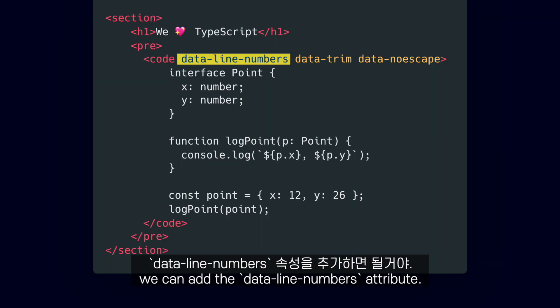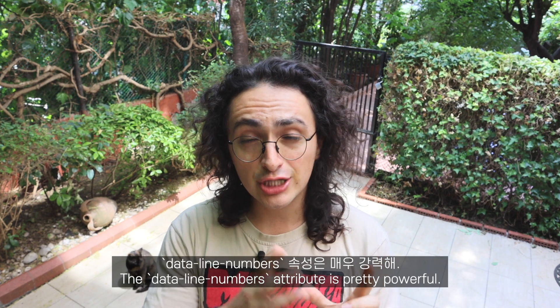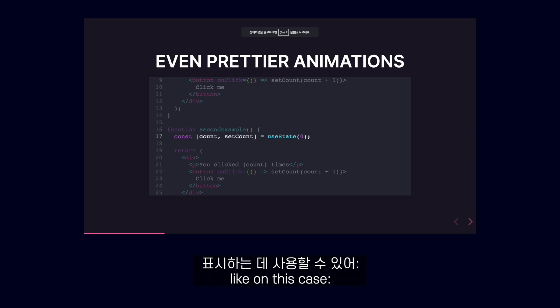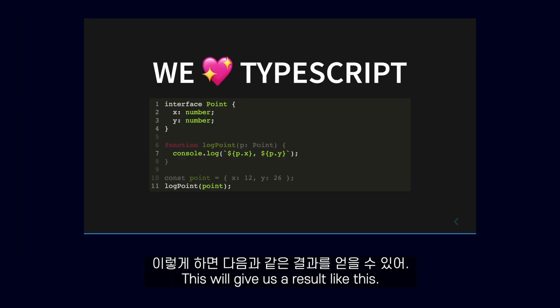To give numbers to the lines of code, we can add the Data Line Numbers attribute, which will result in our code looking like this. The Data Line Numbers attribute is pretty powerful. We can use it to selectively highlight parts of the code — like in this case, where we are saying that we want to highlight lines 1 to 4, line 7, and line 11. This will give us a result like this.